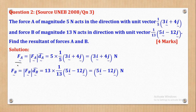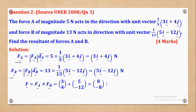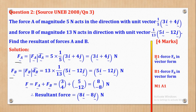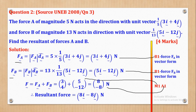Now that I have force A and force B in vector form, the next step is to add the two to come up with the resultant. The resultant force will be 8i − 8j Newtons. Therefore the resultant force is 8i − 8j Newtons. B1 is for getting force A in vector form, B1 for force B, M1 for adding the two forces, and A1 for the output.